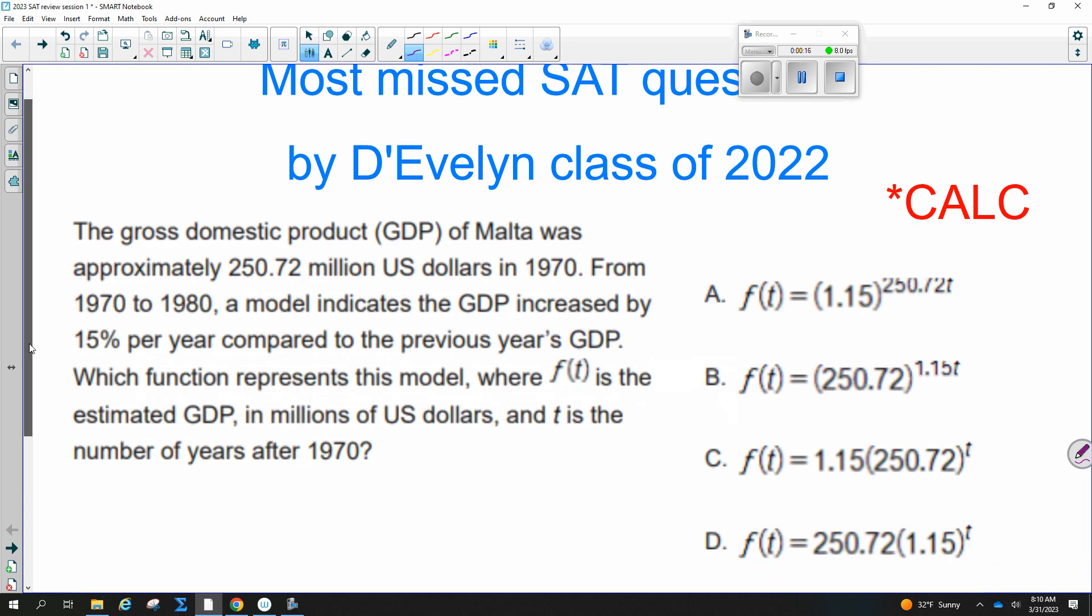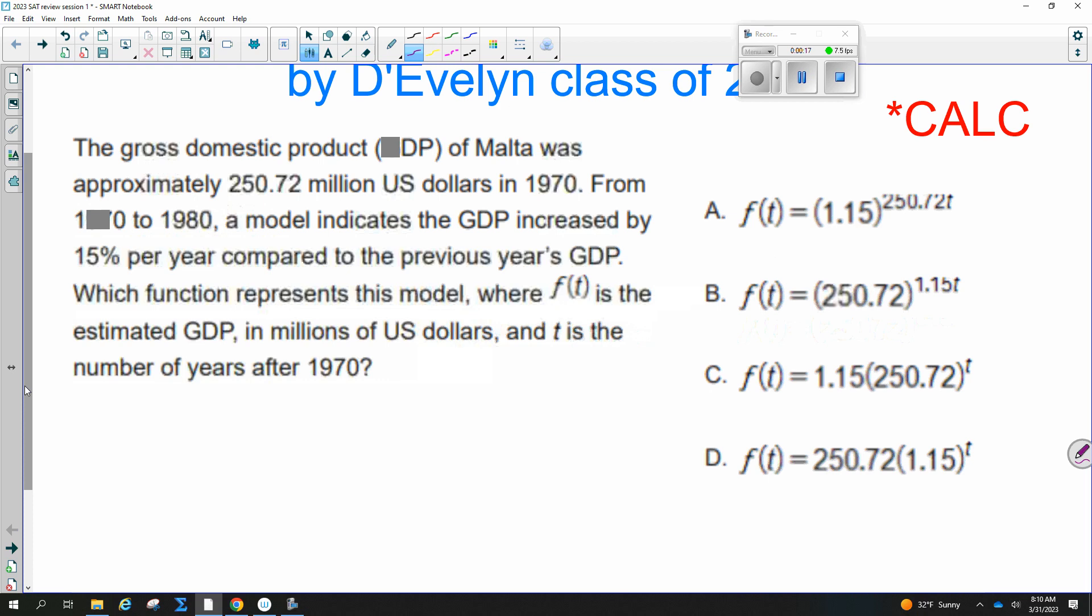The gross domestic product of Malta was approximately $250.72 million in 1970. From 1970 to 1980, a model indicates the GDP increased by 15% per year compared to the previous year's GDP. Which function represents this model where f(t) is the estimated GDP in millions of US dollars and t is the number of years after 1970?